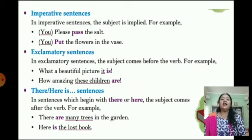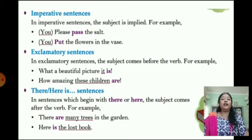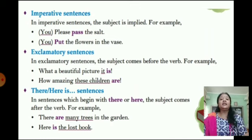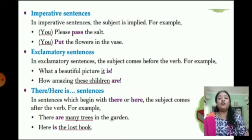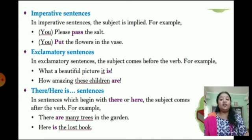Now let's move on to exclamatory sentences. In exclamatory sentences, the subject comes before the verb. For example, 'What a beautiful picture it is!' — 'it' is the subject, which comes before the verb 'is.' Another example: 'How amazing these children are!' — 'are' is the helping verb, and 'these children' is the subject, which comes before the verb.